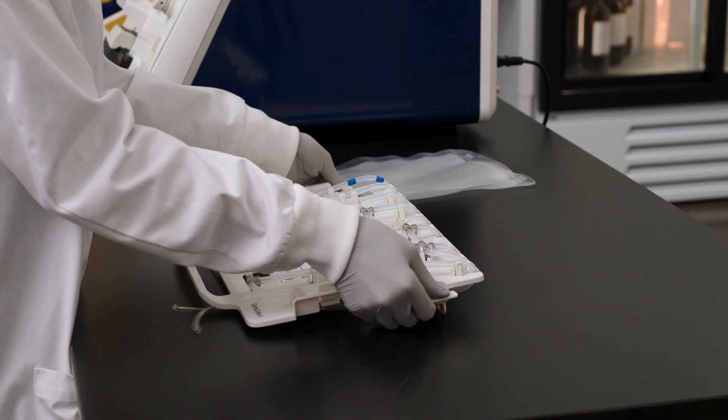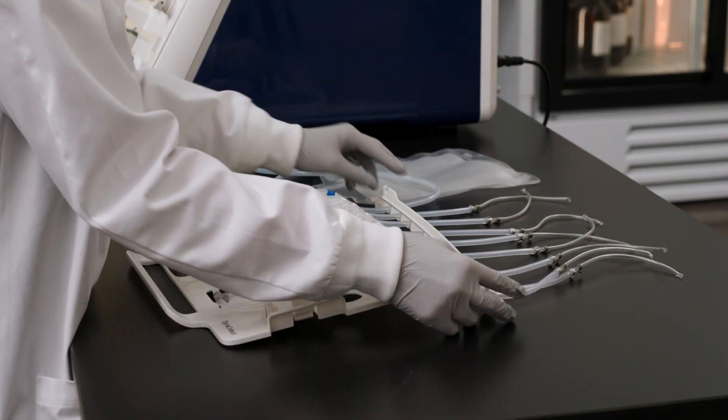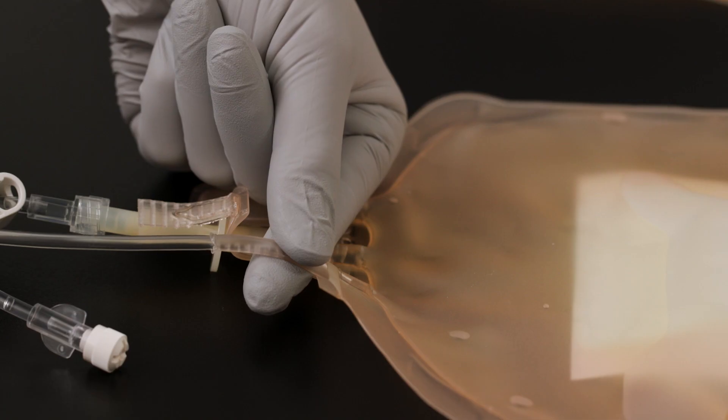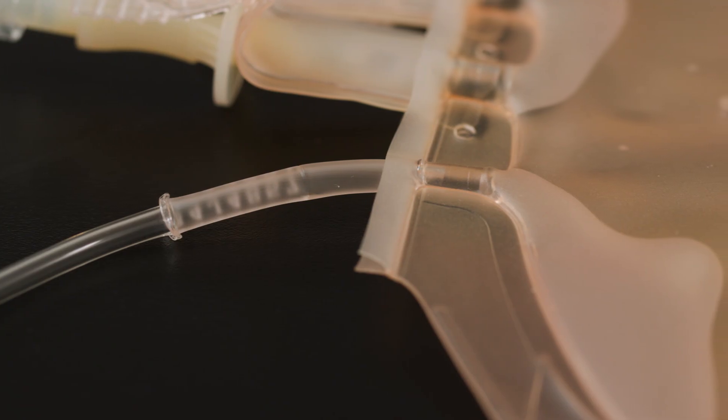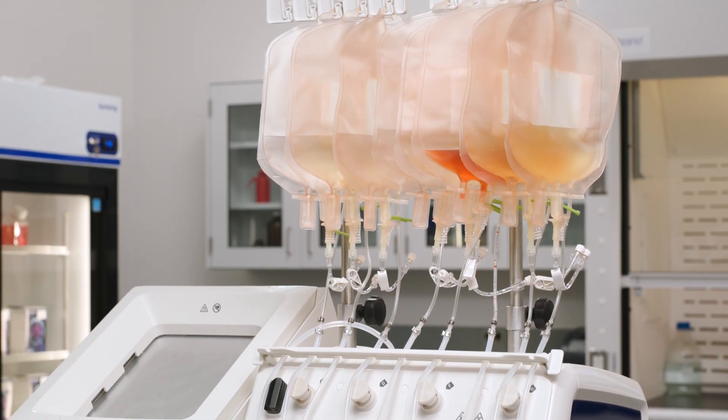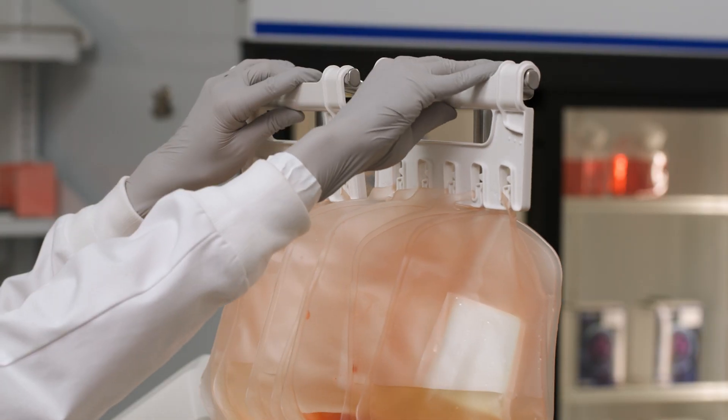Start by removing the tube holder from the catch on the back of the single-use cassette. Then, remove all the tubes from the catch on top of the cassette. Next, sterile weld compatible bags to the 8 weldable DEHP-free PVC tubes. Place bags on the bag hanger, then install them on the DynaSelect.